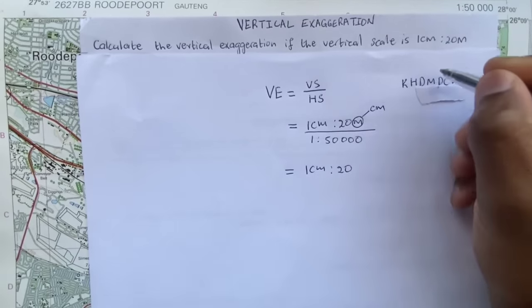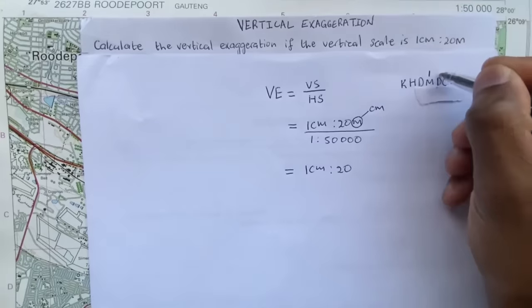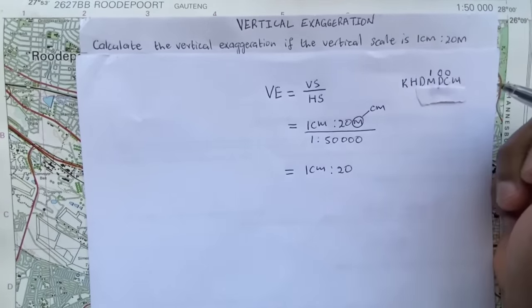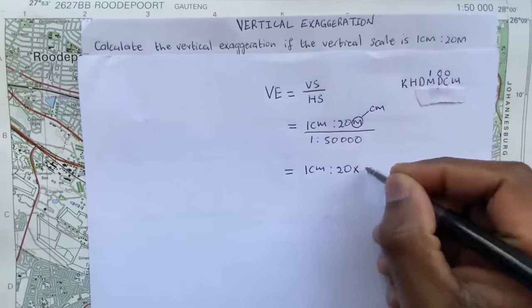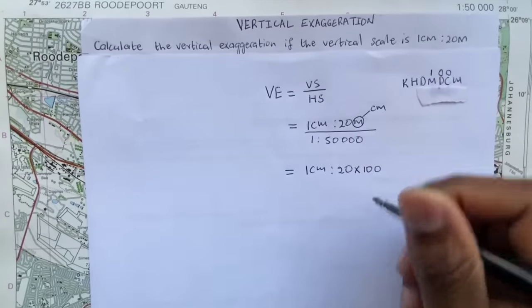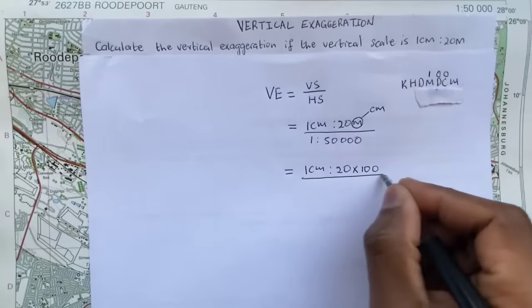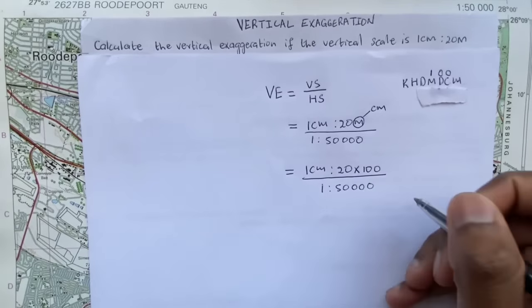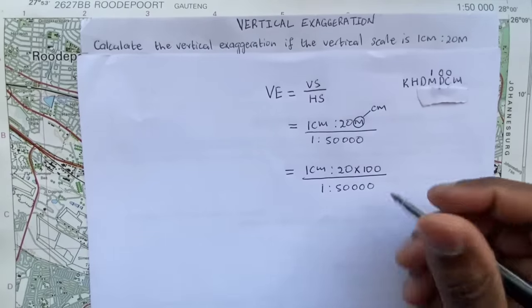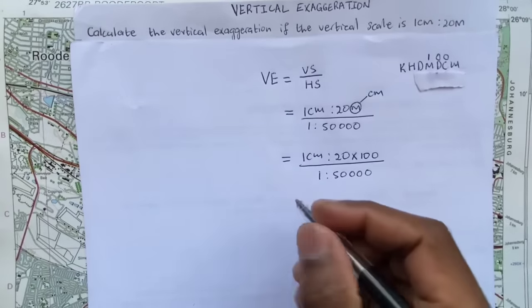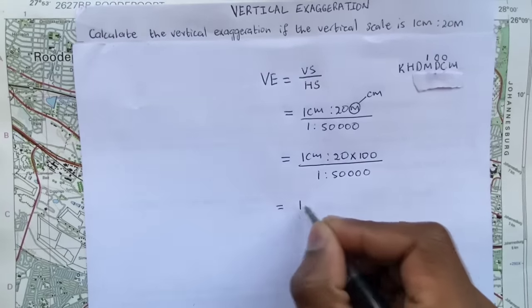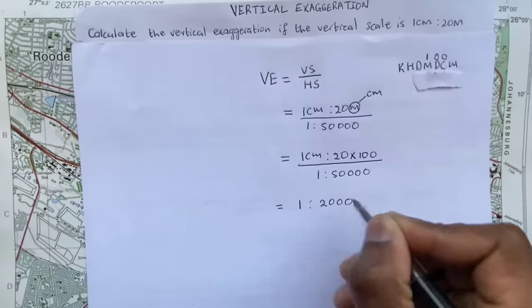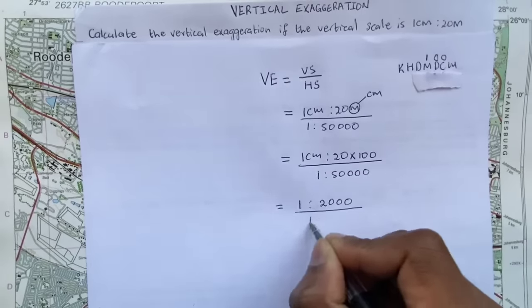So the key solution is to change this meters over here into centimeters. So I will have one centimeter into 20, and I go back to my scale conversion which is kilometers, hectometers, decameters, meters, decimeters, centimeters. I'm in meters and I want centimeters, so I'm going to multiply by 100.